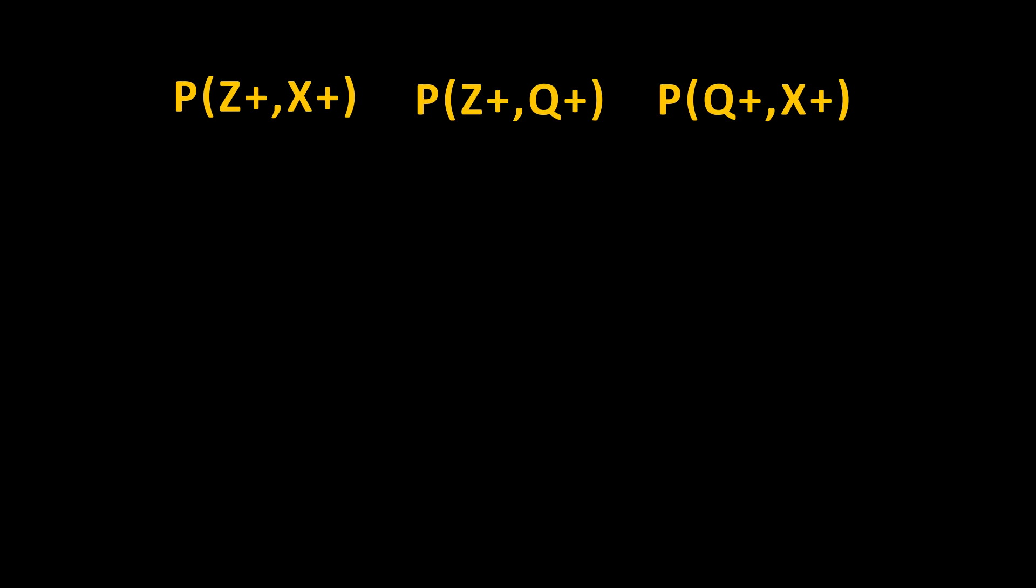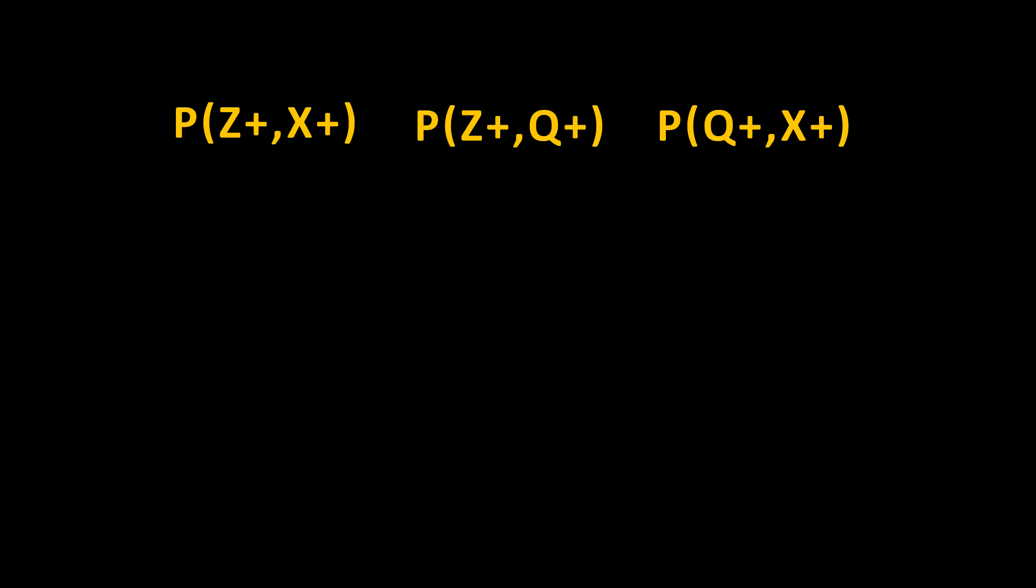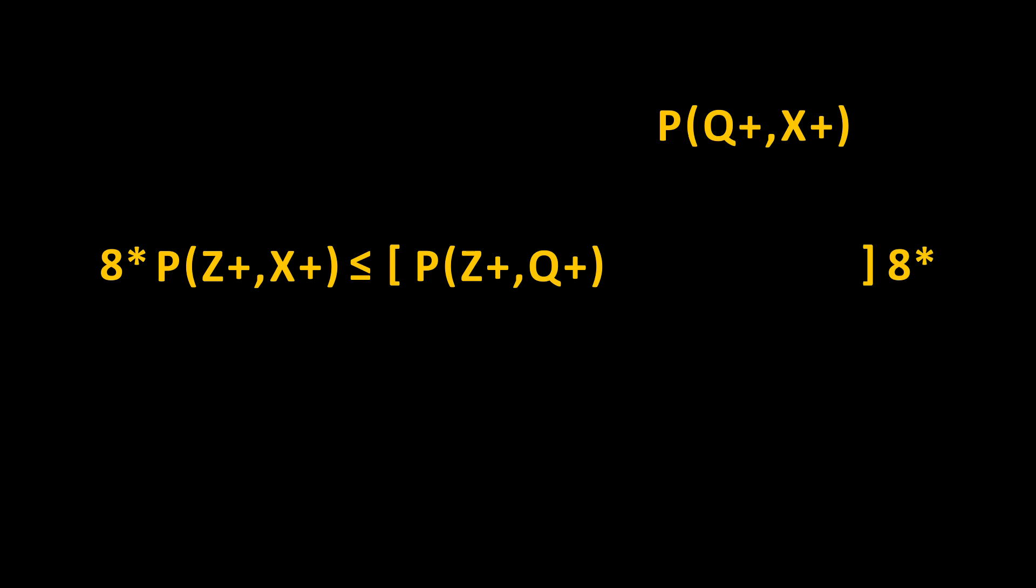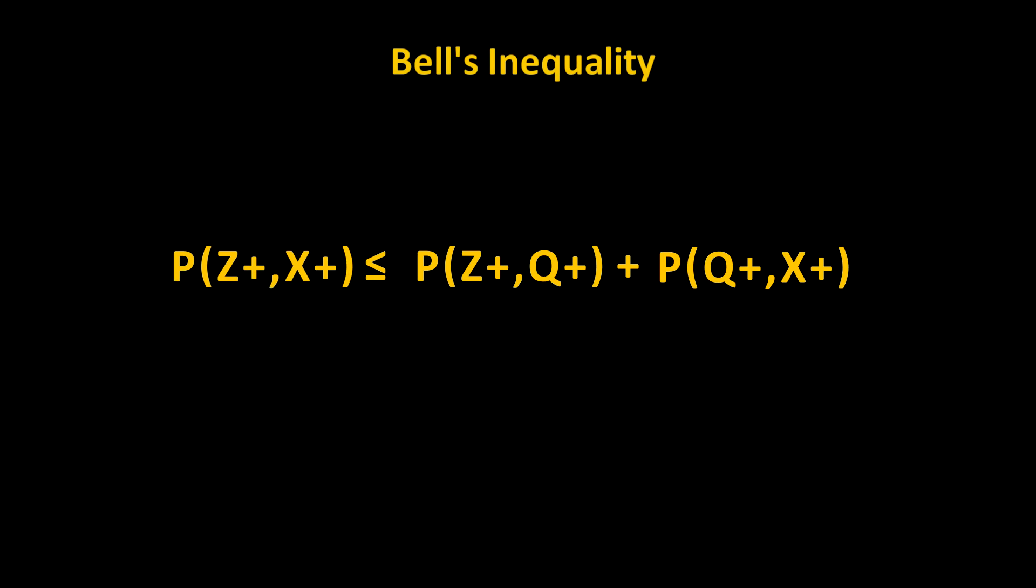Now here's the big insight that John Bell had. If I take the total number of events and multiply that by the probability that Alice measures z positive and Bob measures x positive, this has to be less than or equal to the total number of events times the probability that Alice measures z positive and Bob measures q positive, plus the probability that Alice measures q positive and Bob measures x positive. When we write this out, the 8 cancels out and we are left with just the probabilities. This is Bell's inequality.